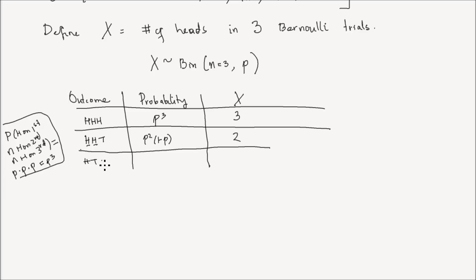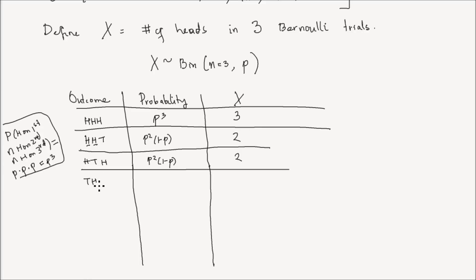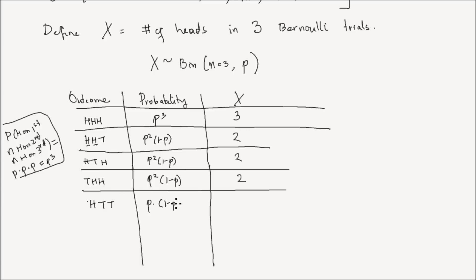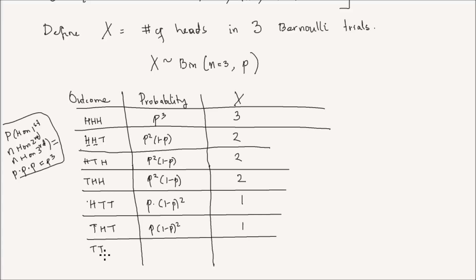For heads, tails, heads: probability is p squared times 1 minus p, and the number of heads is 2. For tails, heads, heads: probability is p squared times 1 minus p, and the number of heads is 2. For heads, tails, tails: probability is p times 1 minus p squared, and the number of heads is 1. For tails, heads, tails: probability is p times 1 minus p squared, and the number of heads is 1. For tails, tails, heads: probability is p times 1 minus p squared, and the number of heads is 1.